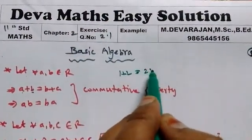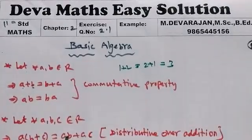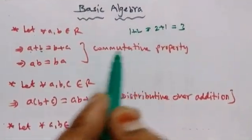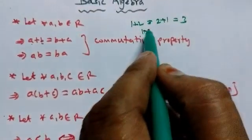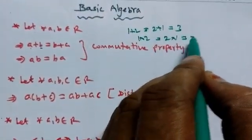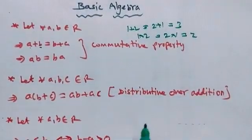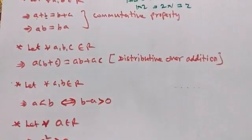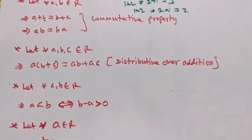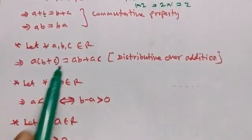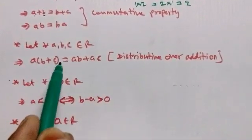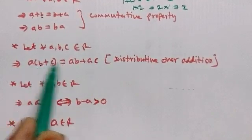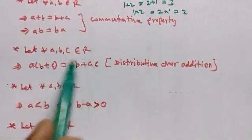For the commutative property: a and b equals b and a. For the distributive property: A times (B plus C) equals A times B plus A times C.